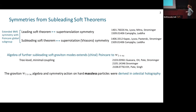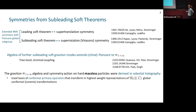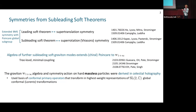This result was derived in celestial holography, where we also derived the symmetry action on hard massless particles. In celestial holography, we use a basis of conformal primary operators that transform as highest-weight representations of Lorentz symmetry, equivalent to an SL(2,C) global conformal symmetry. We made use of the 2D locality of massless particles: massless particles are local at a point on the celestial sphere, so when they become collinear in the bulk, you can think about them approaching each other in an OPE on the boundary.